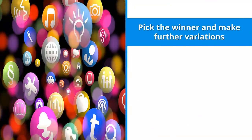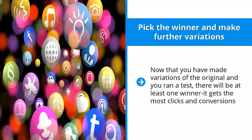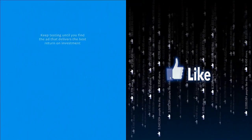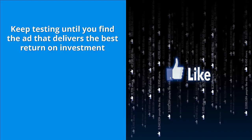Pick the winner and make further variations. Now that you have made variations of the original and ran a test, there will be at least one winner — the one that gets the most clicks and conversions. Make variations of it and run the test again. Keep testing until you find the ad that delivers the best return on investment.